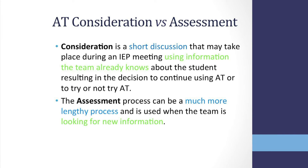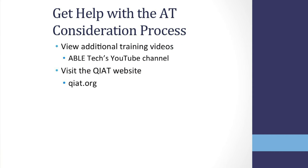Consideration of AT needs is the first quality indicator and the processes are different. Consideration is a short discussion that may take place during an IEP meeting using information the team already knows about the student, resulting in the decision to continue using AT or to try or not try AT. The assessment process can be a much more lengthy process and is used when the team is looking for new information. If you or your school needs more information regarding the quality indicators for assistive technology, please view ABLE Tech's YouTube channel and or visit qiat.org.